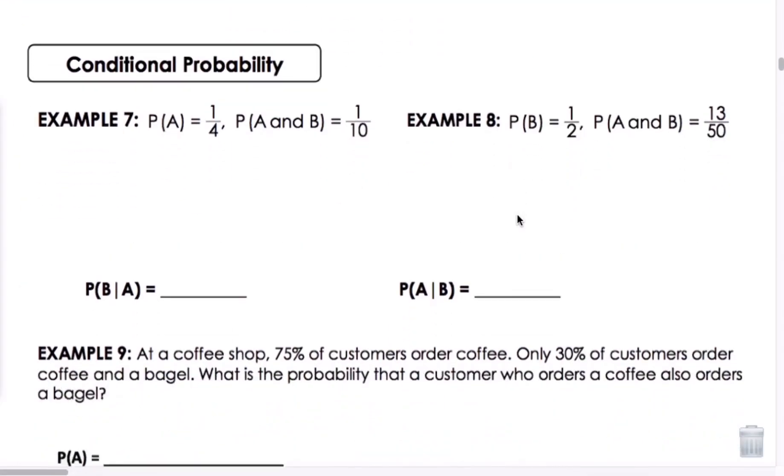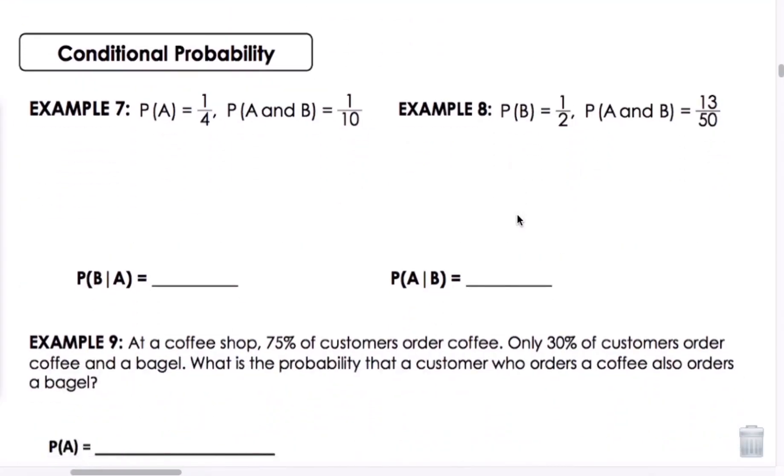Let's do our last section on conditional probability. Again, in example 7 and 8, we're just going to give the information and use the formula. So we want to know what the probability of B happening if A occurred. So in this case, we're going to do P of A and B, 1 tenth, divided by P of A, which will give us 2 fifths.